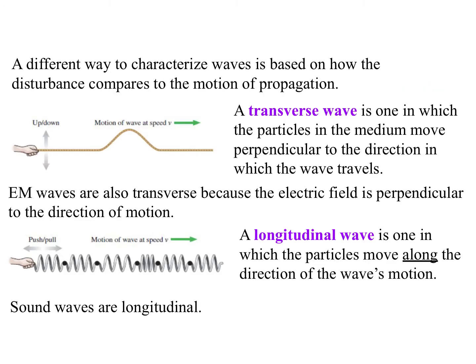A different way to characterize waves is based on how the disturbance compares to the motion of propagation. A transverse wave is one in which the particles in the medium move perpendicular to the direction in which the wave travels. So if we're looking at someone snapping a rope, they move their hand up and down, every part of the rope moves up and down, and yet the bump moves over.